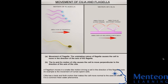An example of a flagellate bacteria is the ulcer-causing Helicobacter pylori, which uses multiple flagella to propel itself through the mucous lining to reach the stomach epithelium. An example of the eukaryotic flagellate cell is the mammalian sperm cell, which uses its flagellum to propel itself through the female reproductive tract.